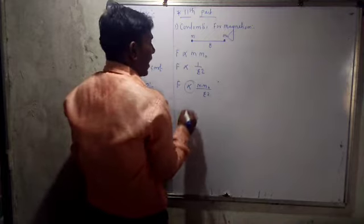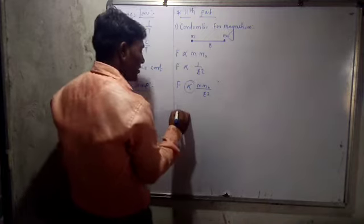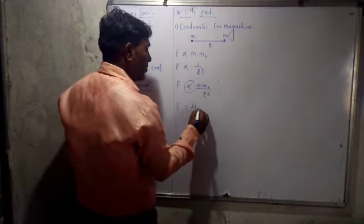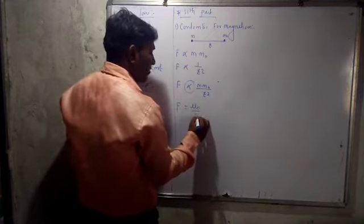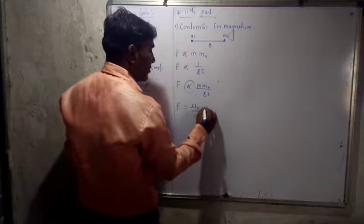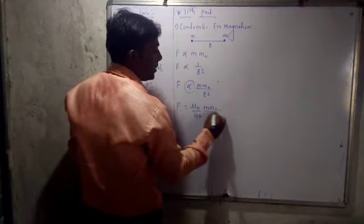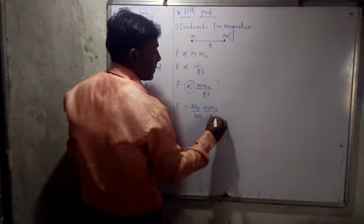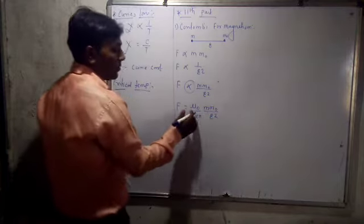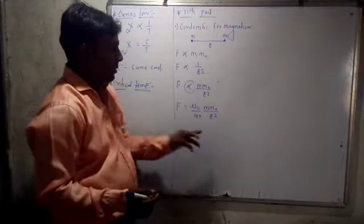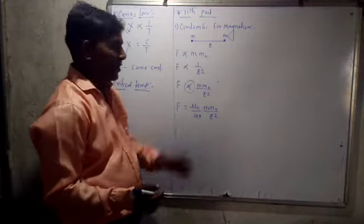If you remove the proportionality sign and add the constant — the Coulomb constant — the force equals mu0 upon 4pi, multiplied by M times M0 upon R square.